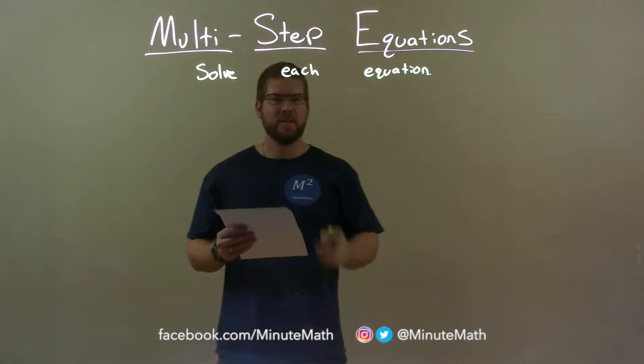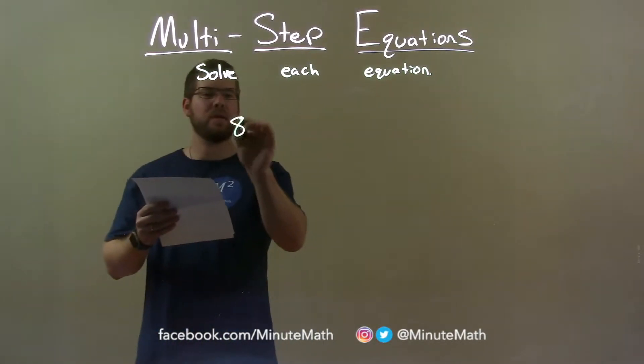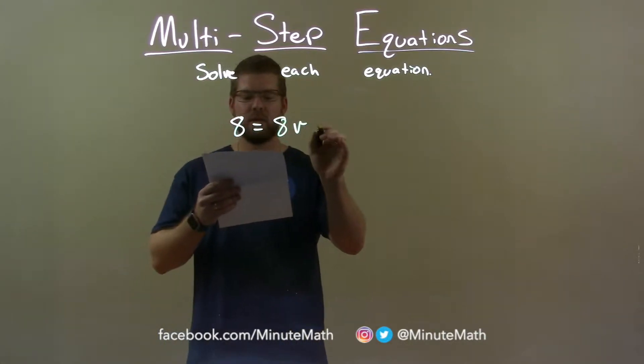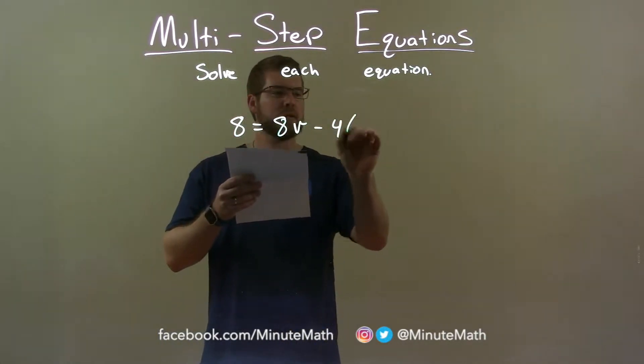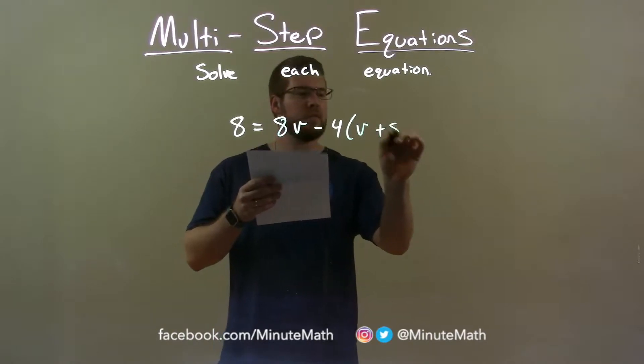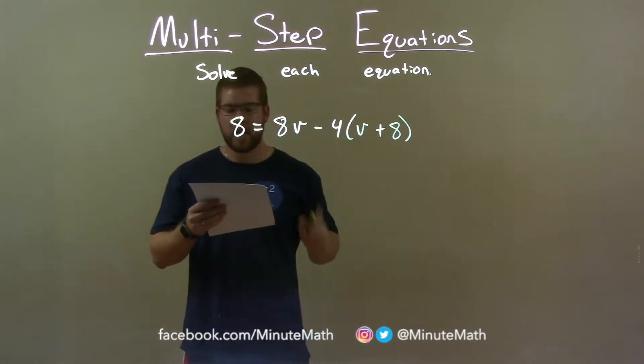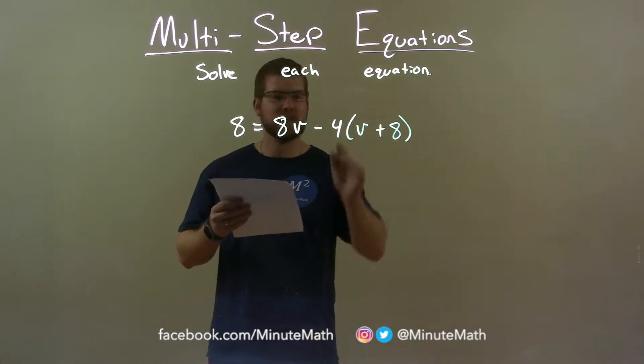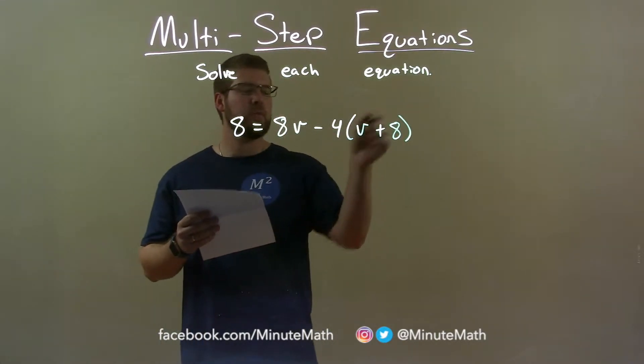Now, if I was given this equation, 8 equals 8v minus 4 times v plus 8, the first thing I do here is I'm actually going to distribute the negative 4 to both parts in the parentheses.